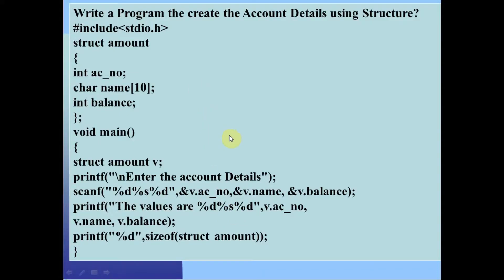Example program: write a program that creates account details using structure. Here we define the structure — 'amount' is the structure name with data members, and v is the structure variable name. To enter account details: v.account_number, v.account_name, and v.balance — getting input using the scanner function, accessing each variable through the structure variable.